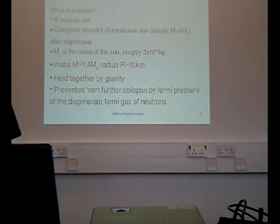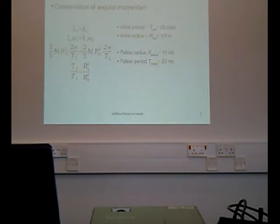So we start with a pulsar. A pulsar is just a neutron star, which is a collapsed remnant of a massive star, usually typical masses about 1.4 solar masses, typical radius about 10 km. It's held together by gravity, and it doesn't collapse because of degenerate fermi gas of neutrons, basically by fermi pressure.